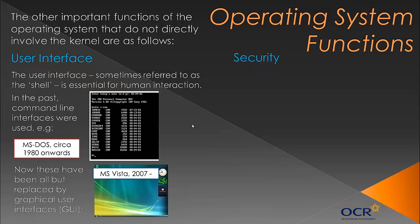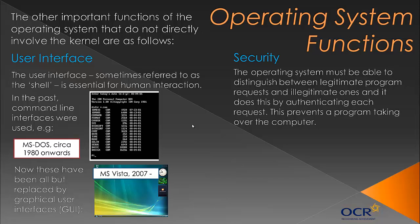Another function of an operating system is to provide security. It will do this to a certain extent, though you may want to buy or download additional programs to help. The OS must be able to distinguish between legitimate program requests and illegitimate ones. If you had a virus on your computer — accidentally downloaded or deliberately placed — it needs to identify which program requests are real and which aren't. A request from Microsoft Word is legitimate; one from a virus is not. It authenticates each request, though illegitimate programs are designed to trick the OS, which is where a third-party program can help.